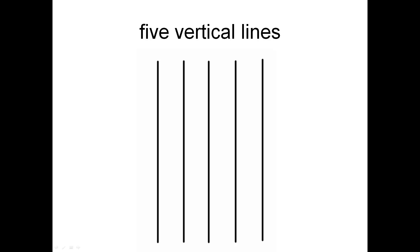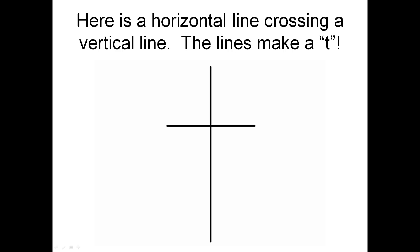Here are five vertical lines. Here is a horizontal line crossing a vertical line. The lines make a T.